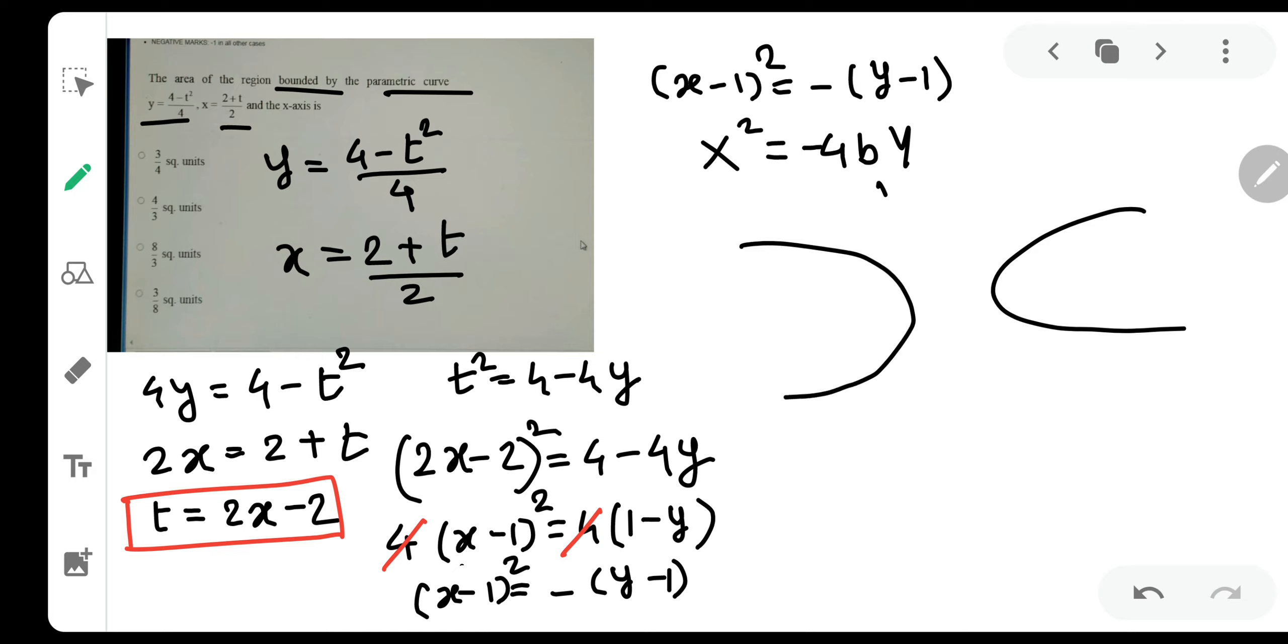This is y square equal to 4x. This is y square equal to minus 4x. This is x square equal to 4by. And this is x square equal to minus 4by. Our curve is x square equal to minus 4by. So this is our curve. The fourth curve which is vertically downwards.